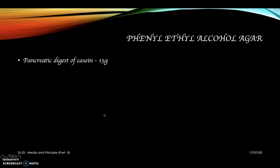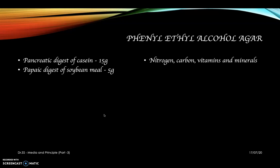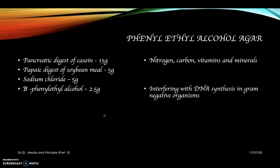The composition includes pancreatic digest of casein, which is a protein source, and papaic digest of soybean meal providing nitrogen, carbon, vitamins, and minerals. Sodium chloride is used for osmotic balance. Beta-phenylethyl alcohol is mainly involved in inhibiting gram-negative organisms, particularly by interfering with the DNA synthesis process of gram-negative organisms.